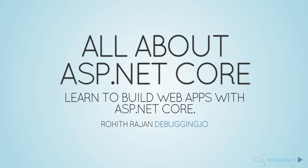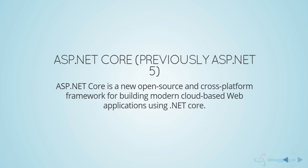ASP.NET Core is built on top of .NET Core, so we'll also discuss the internals of ASP.NET Core and the .NET Core runtime. ASP.NET Core was previously known as ASP.NET 5. As of now, ASP.NET Core is at RC2. It is a new open source and cross-platform framework built from the ground up, targeted towards building modern, cloud-based web applications running on .NET Core.